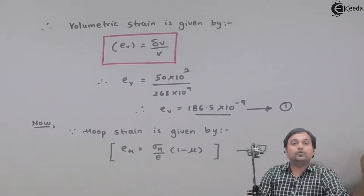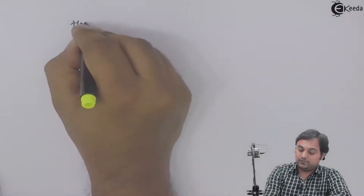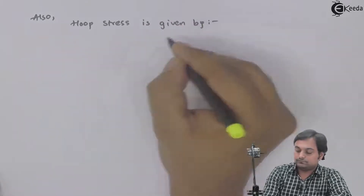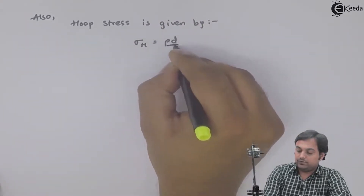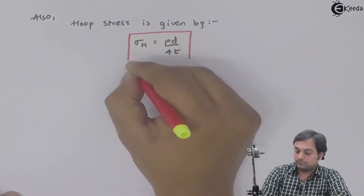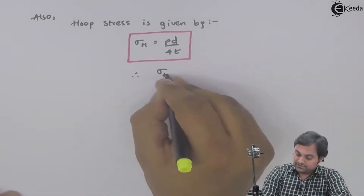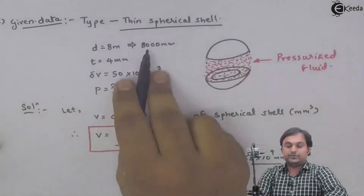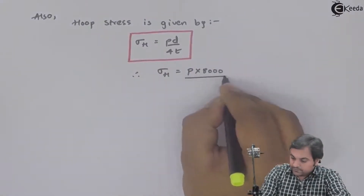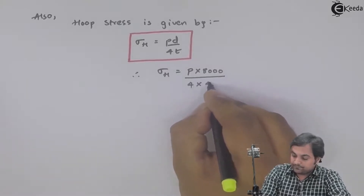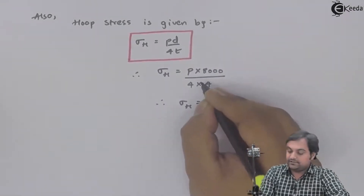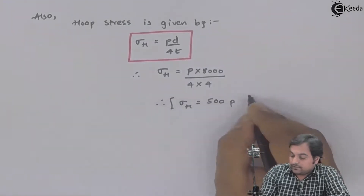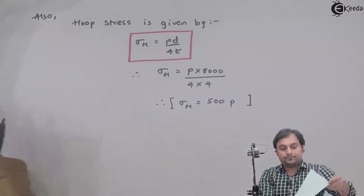Hoop stress is given by PD/4t. Therefore hoop stress = P × 8,000 divided by 4 × 4 mm thickness. From this, hoop stress in terms of internal pressure P equals 500P. I will now put this value into Equation 2.